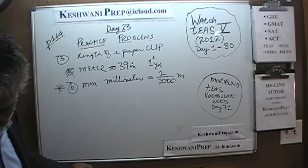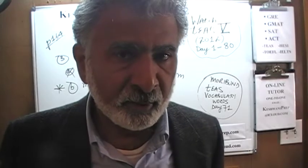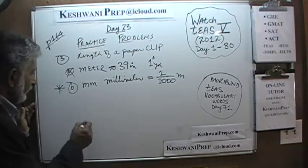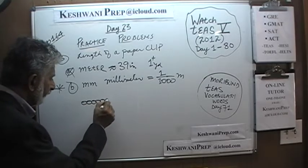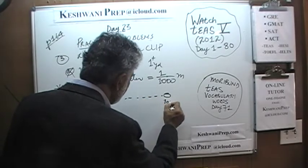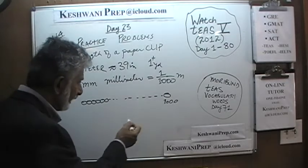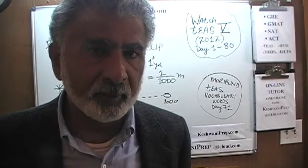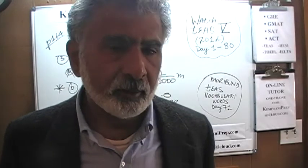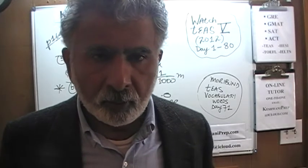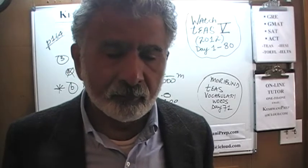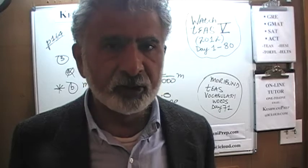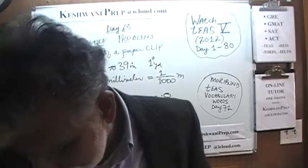Another way to think about why millimeter is a better representation of the length of a paper clip: if you were to line up one thousand paper clips one after the other in a straight line, that would be approximately a meter — about 39 inches long. So yes, we can use millimeter as a representation of the length of a paper clip. We cannot use meter because it's too long, and we cannot use milliliter or liter because those measure liquid.